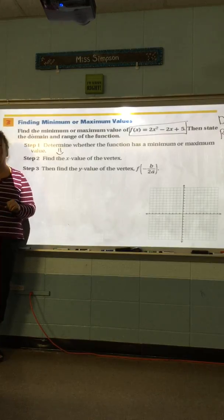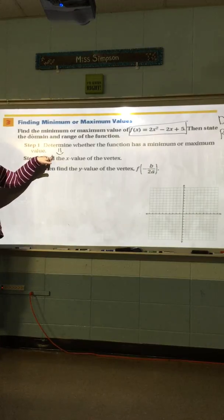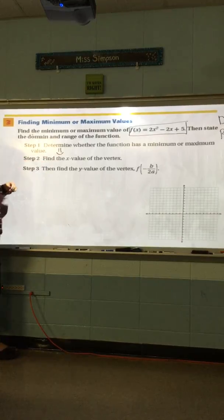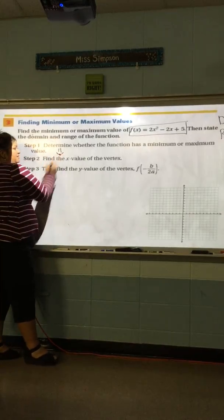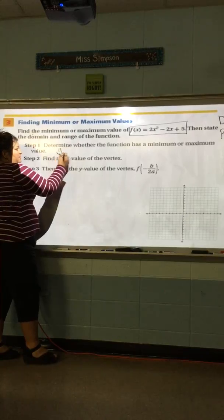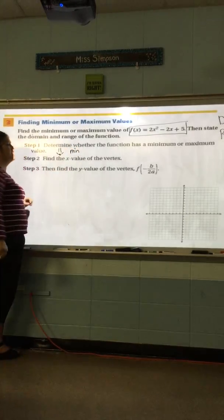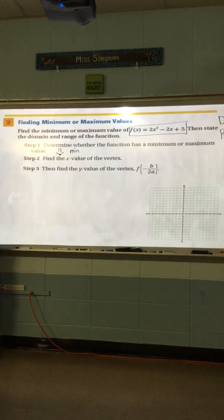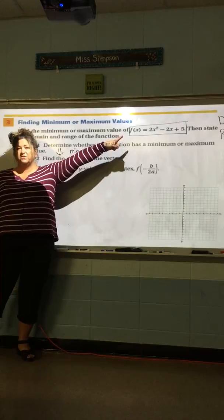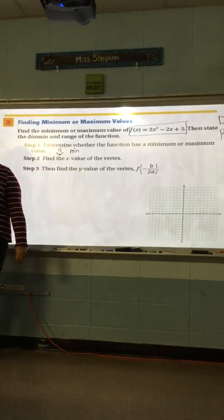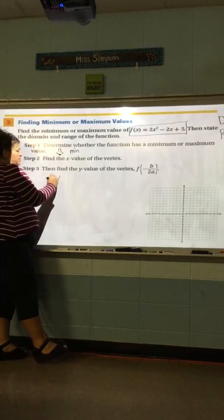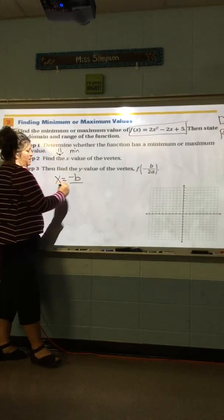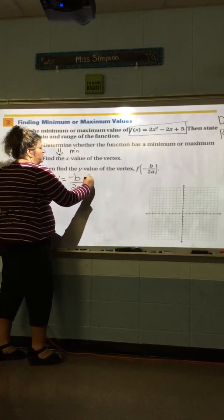Is this going to be a max or a min? A min. Because it's the bottom point. So, we need to find the x value of the vertex. How do I find that? Is this in vertex form? No. So, then how am I going to find it? Negative b over 2a.